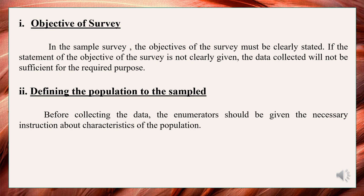Defining the population to be sampled: Before collecting the data, the enumerator should be given the necessary instruction about the characteristics of the population. The population from which the sample is chosen should be defined in clear and unambiguous terms. The geographical, demographic, and other boundaries of the population must be specified, so that no ambiguity arises regarding the coverage of the survey.